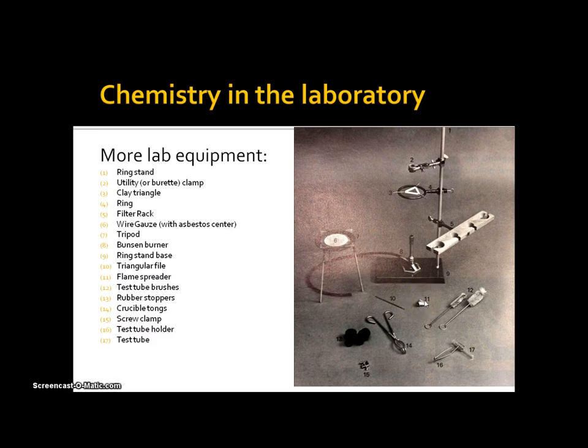A flame spreader is used for spreading out a flame, quite often used in bending glass and so on. Test tube brushes, that's these. Rubber stoppers, that's these here. Crucible tongs - it's not just for carrying crucibles, it could carry lots of other things that happen to be hot that you don't want to touch.